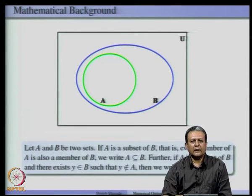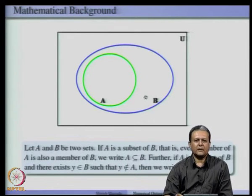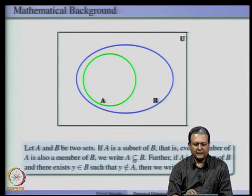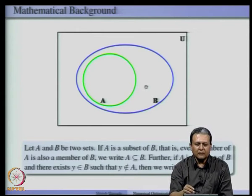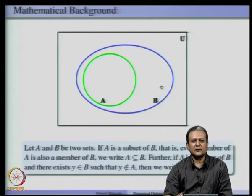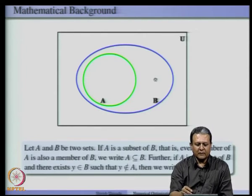Suppose A and B are two sets where every member of A is also a member of B; we write this as A ⊆ B, meaning A is a subset of B. If there exist some elements in B which are not part of A, then A is called a strict subset of B. So if A is a subset of B and there exists some element y belonging to B such that y does not belong to A, we write A as a strict subset of B, denoted by this symbol.